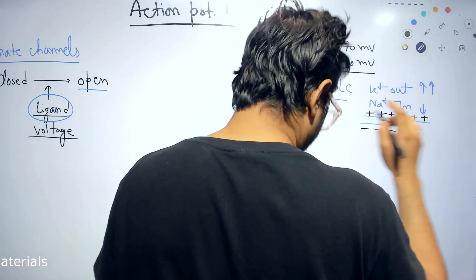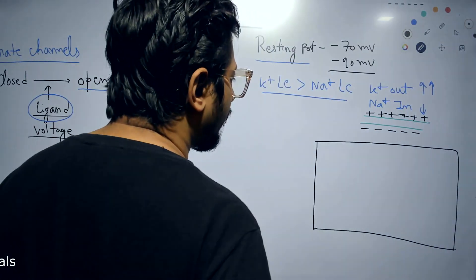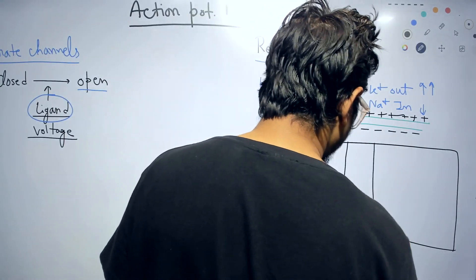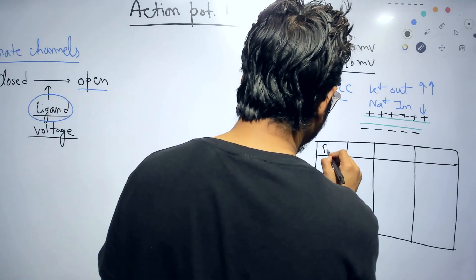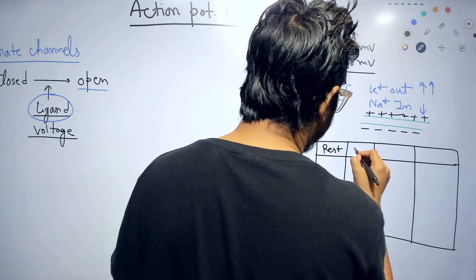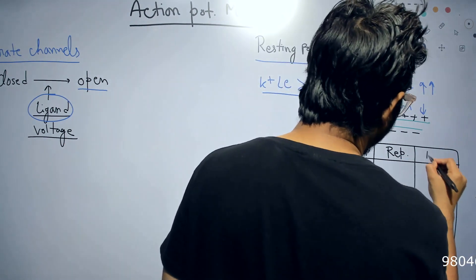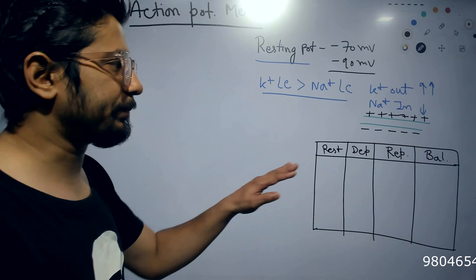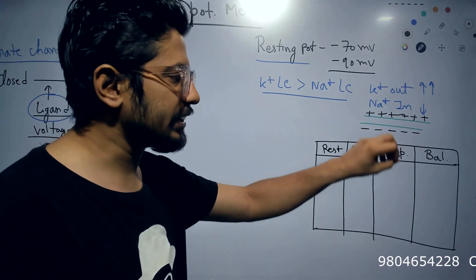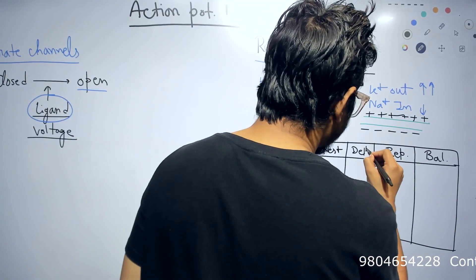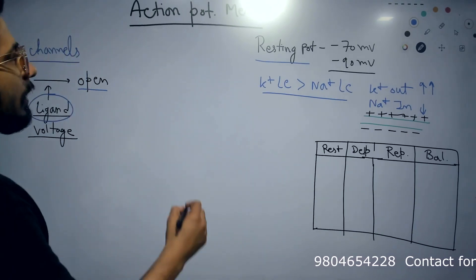There are four major stages of action potential. First is the resting state, then the initiation state — that is depolarization — then repolarization, and finally the balancing state. These are the four different steps: resting membrane potential state, depolarization state, repolarization state, and balancing state.